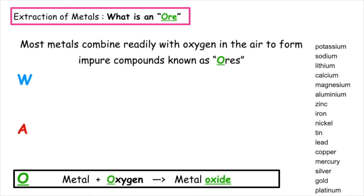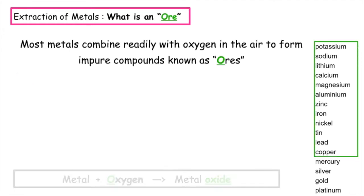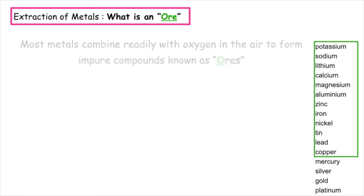We already know from previous lessons that copper and above in the reactivity series can react with oxygen to form a metal oxide. This is a metal which is directly combined with oxygen which is known as an ore.